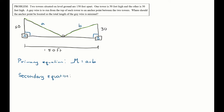I don't know the bottom lengths, so I'll call the left one x and the right one y. For triangle A: a² = x² + 50², and for triangle B: b² = y² + 30². That gives me the secondary equations.